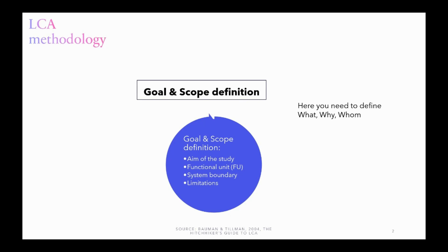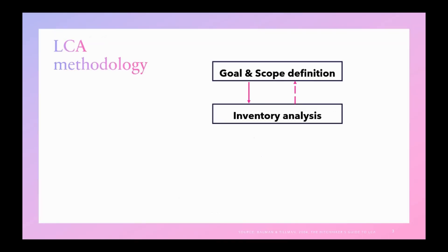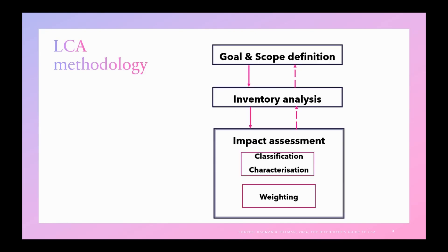It should also include the functional unit and then the system boundary. To do what your goal and scopes are, you start with an inventory analysis, which means that you start to collect all the data on energy and materials flow in the system for all the processes that are included in the system boundary. Outputs means the emissions to the air, water, and soil. You will use that inventory for the impact assessment.